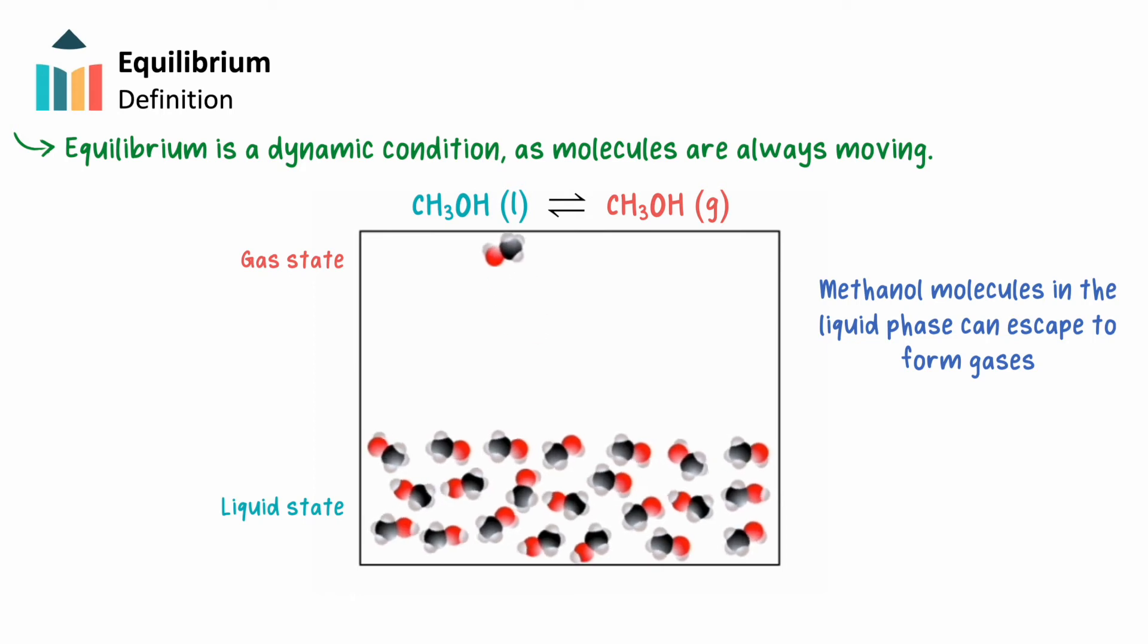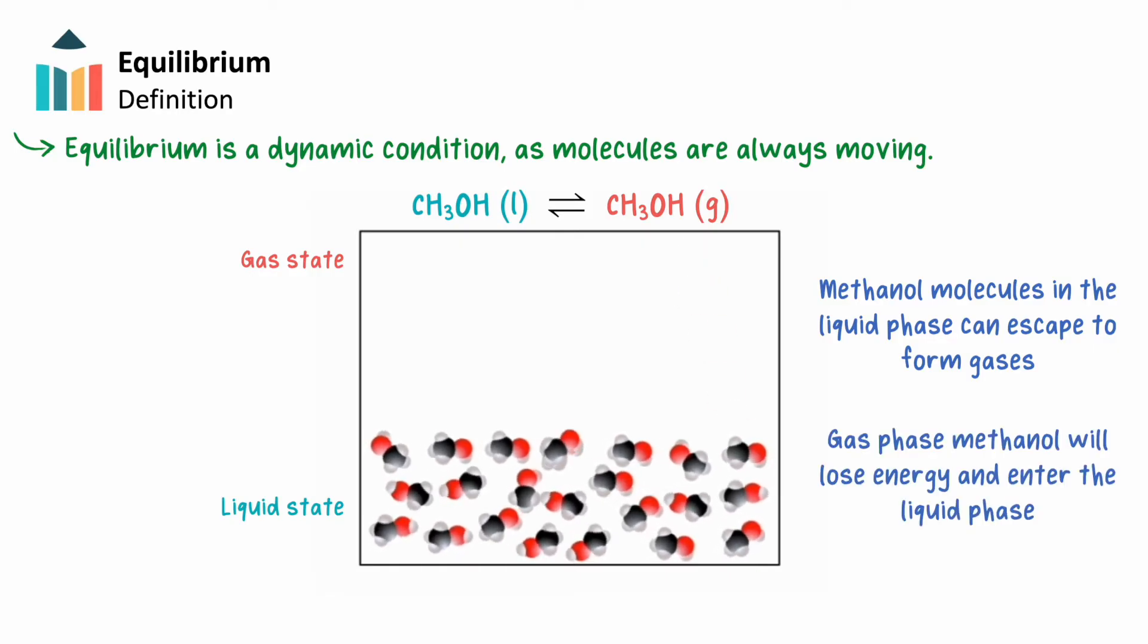As more methanol molecules vaporize, the vapor pressure increases, and the number of collisions above the surface of the liquid will increase as well. Some of the gas molecules will collide with liquid molecules and, losing energy, will move back into the liquid phase.